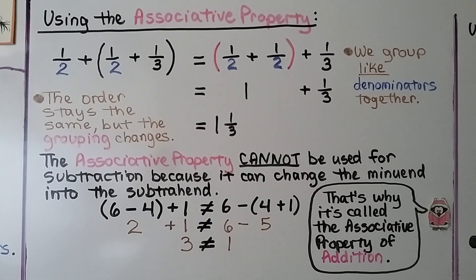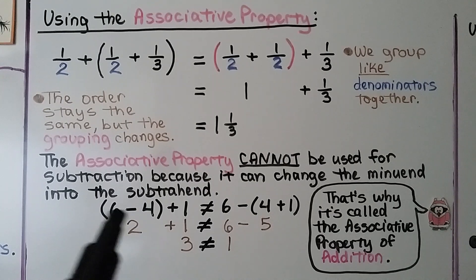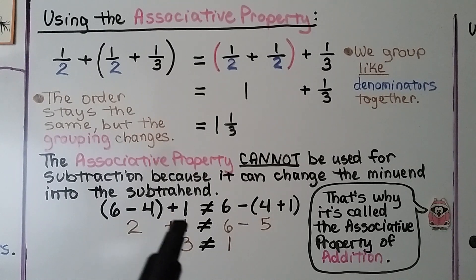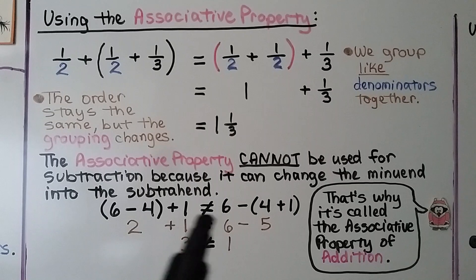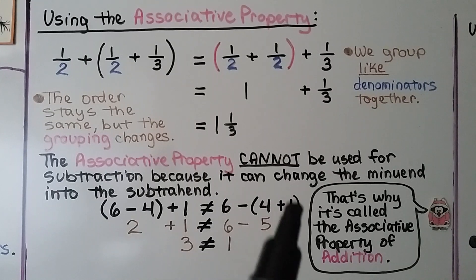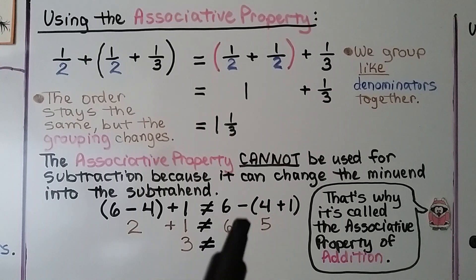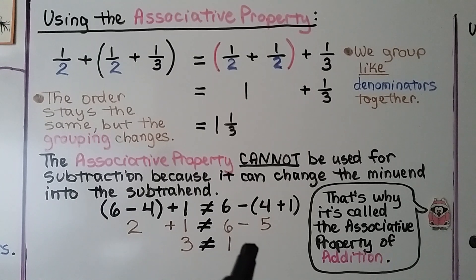The associative property cannot be used for subtraction because it can change the minuend into a subtrahend and that won't work. For example, 6 minus 4 in parentheses plus 1 gives 2 plus 1, which equals 3. But if we changed the grouping to 4 plus 1, we'd have 6 minus 5, which equals 1. This side equals 3 and this side equals 1 — that's why the associative property of addition does not work for subtraction.